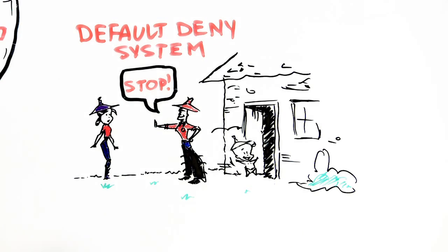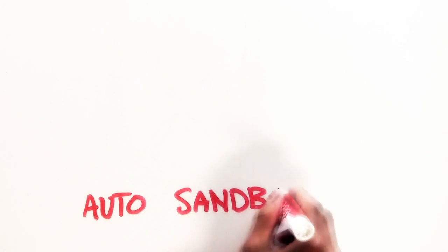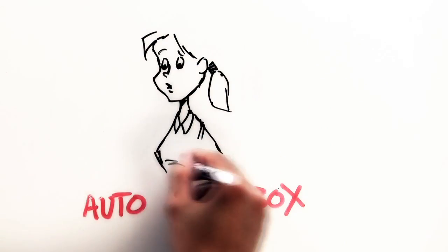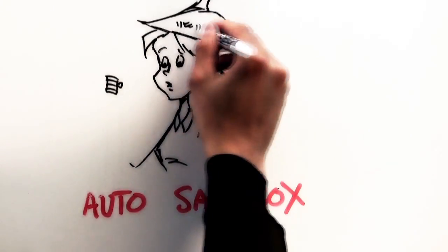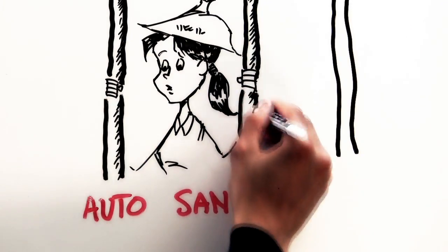If an application is bad, we know it's bad, we stop it. If it's good, we know it's good, we let it in. And if it's unknown, what we do is we automatically sandbox it—like a little jail, a little cell. We put them into a little cell just for a short period of time until we know who they are and if they're going to behave themselves or not.